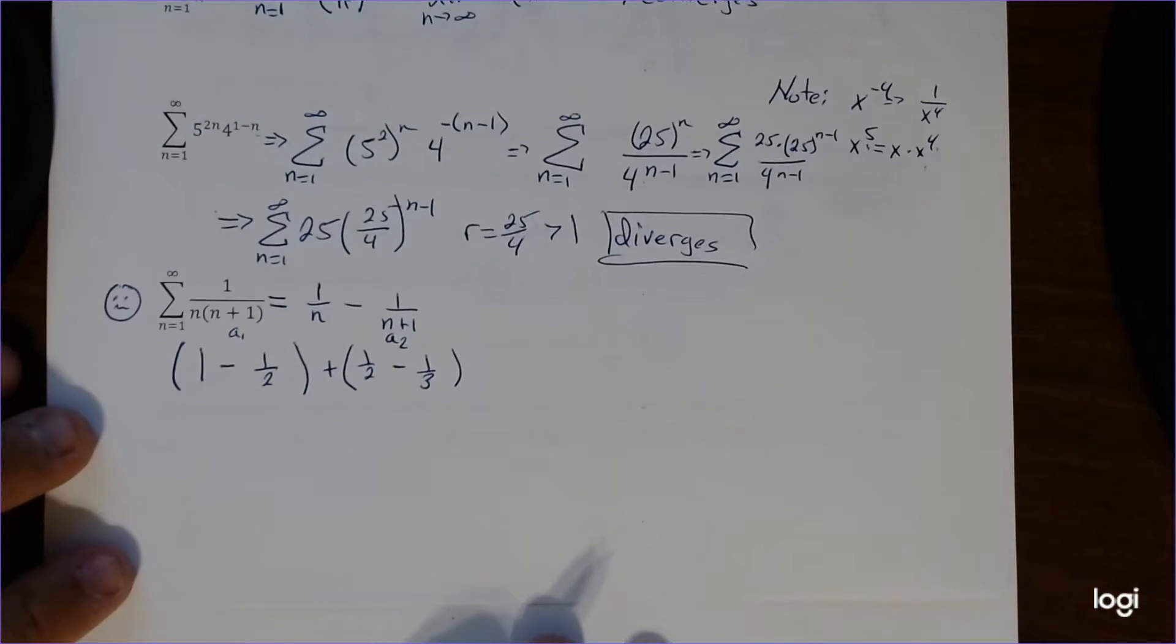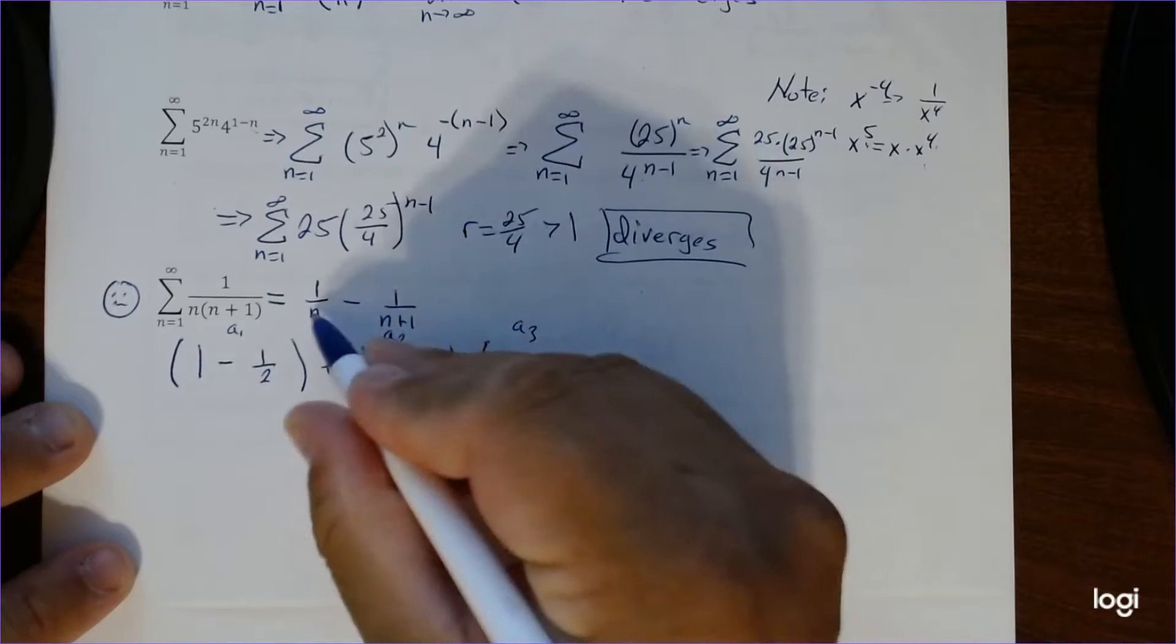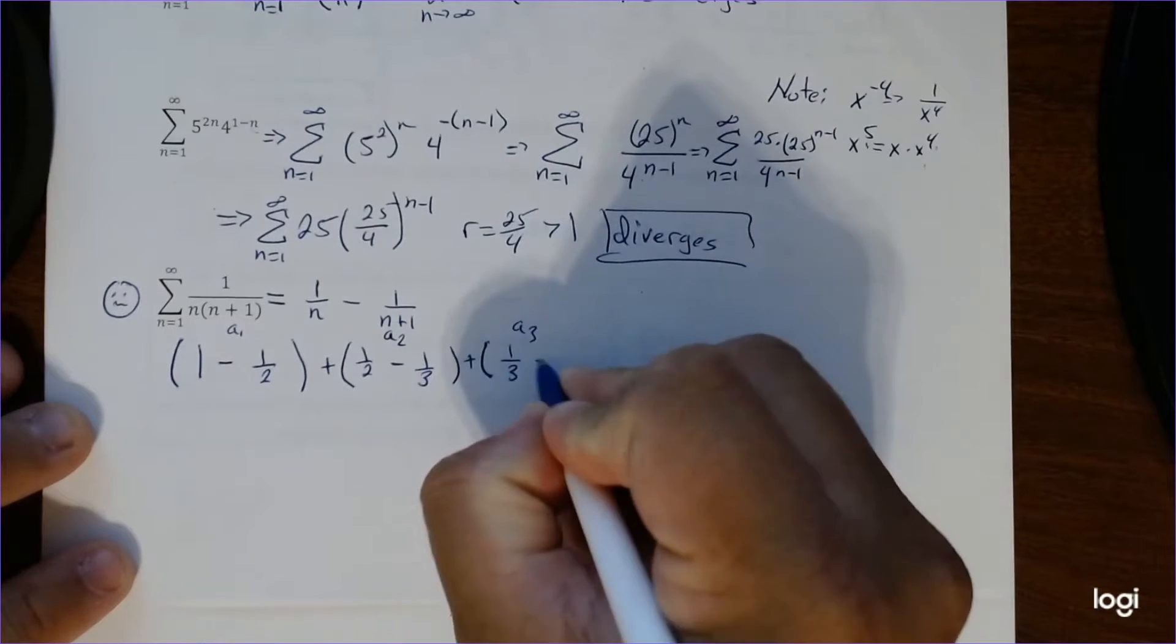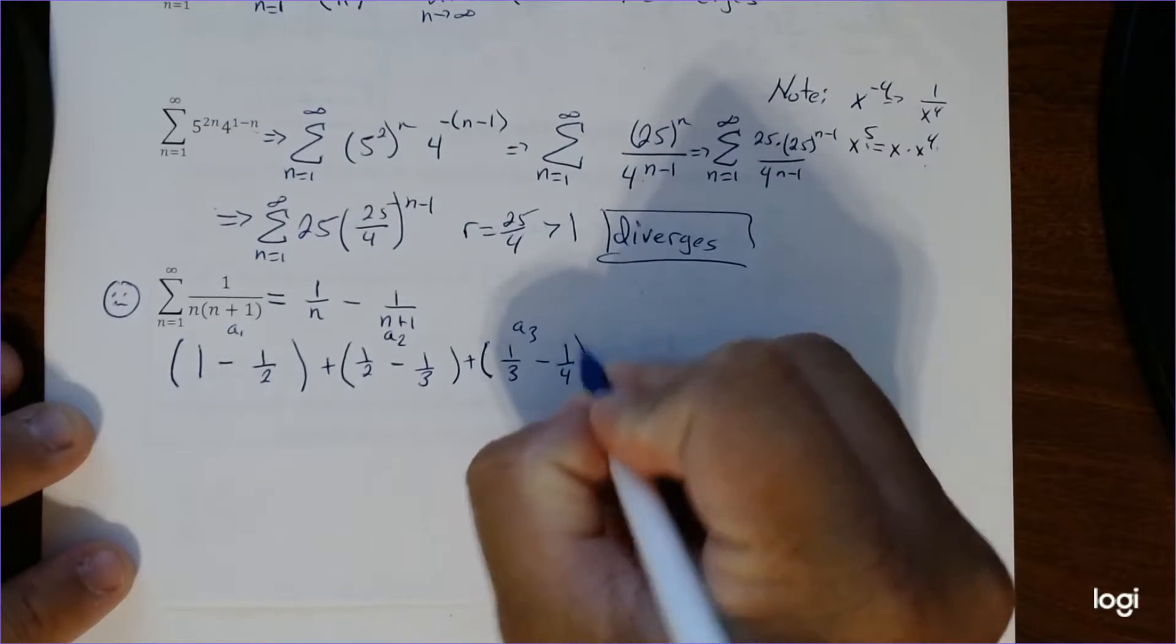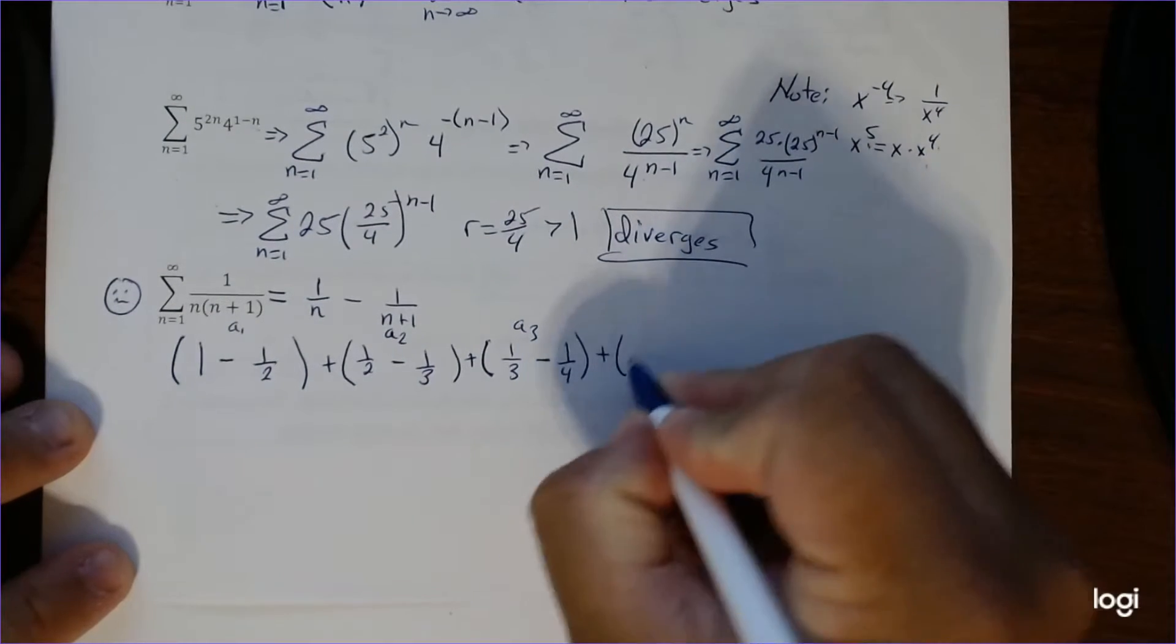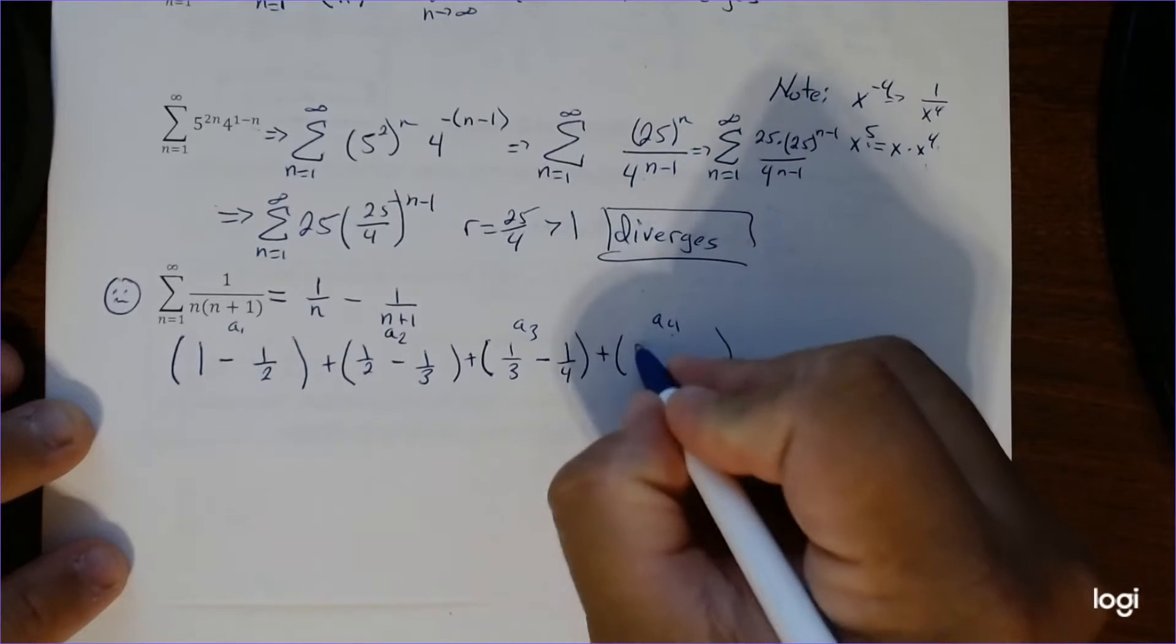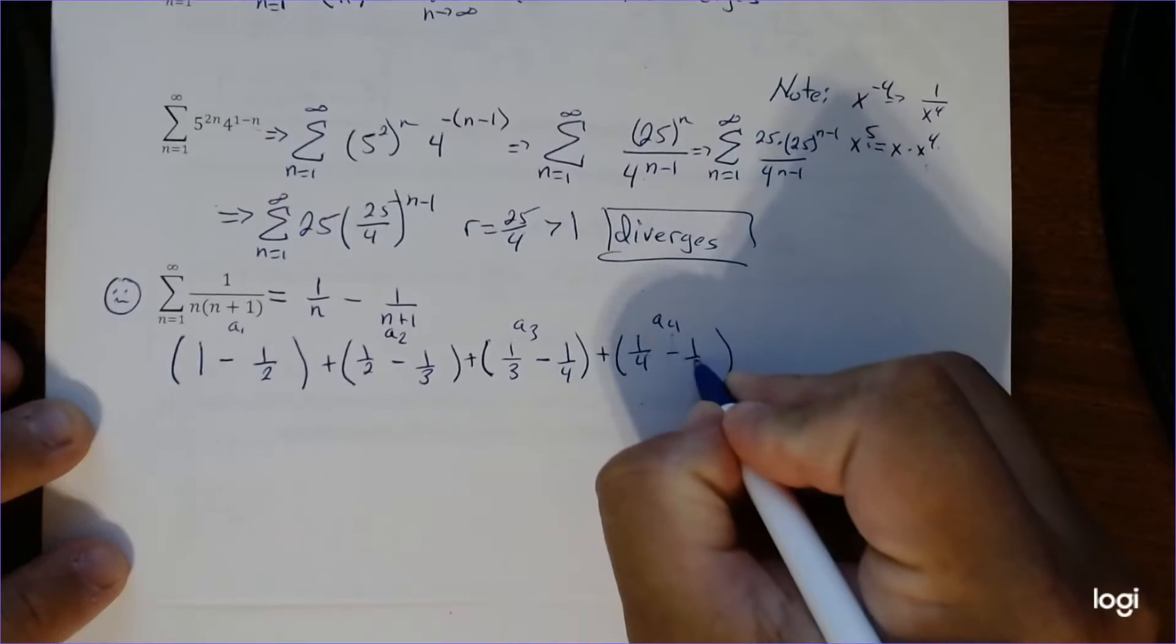Okay, next one. So if I do my third term, plug in 3, that's 1 third minus 1 fourth. And do you guys see a pattern? Let's do one more. Plug in 4, I get 1 over 4 minus 1 fifth.